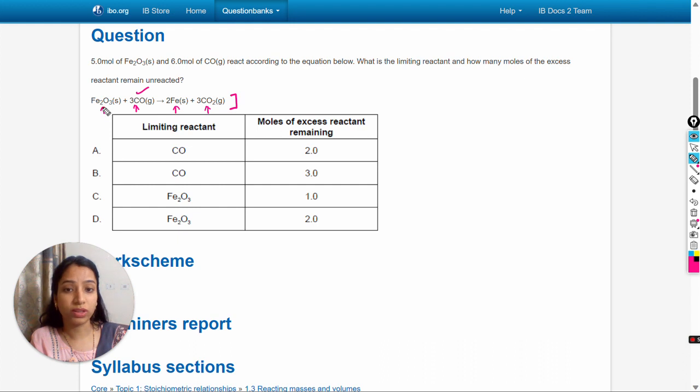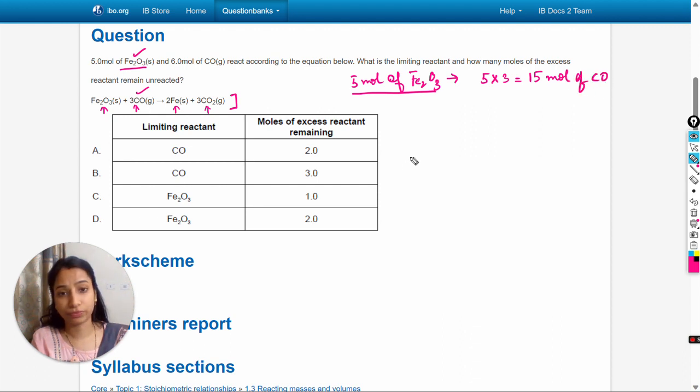So we can say that three times the amount of CO reacts with Fe2O3. Moles of Fe2O3 given are 5 moles. So if 5 moles of Fe2O3 are given, then they will react three times with the CO. So 5 multiplied by 3 equals 15. So 5 moles of Fe2O3 react with 15 moles of CO.